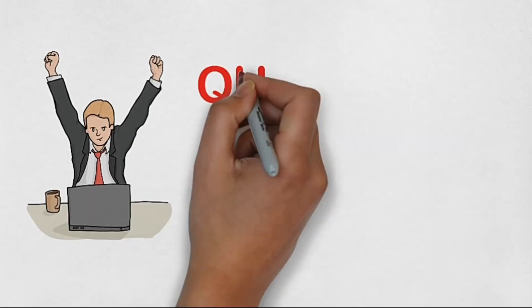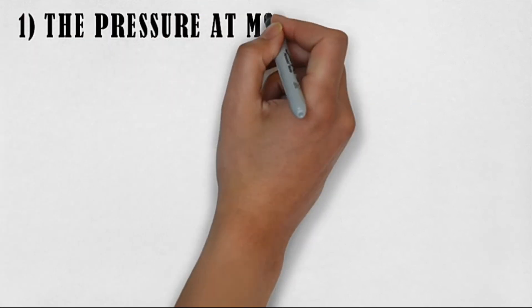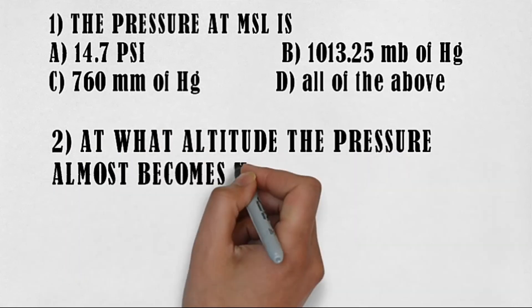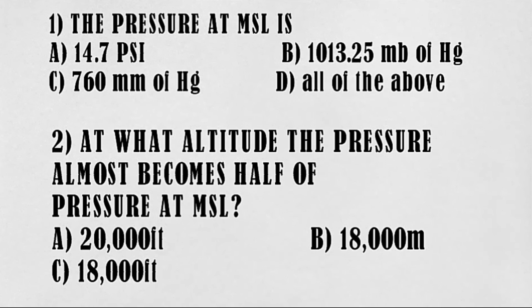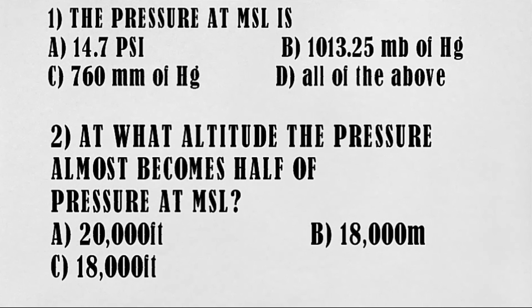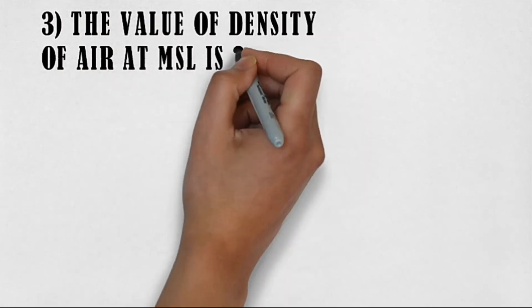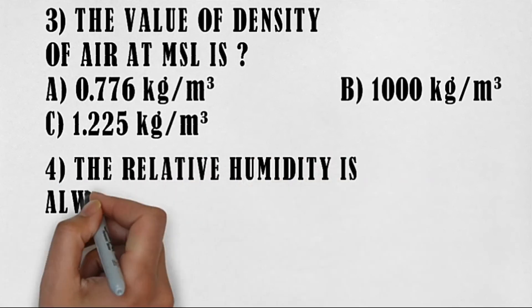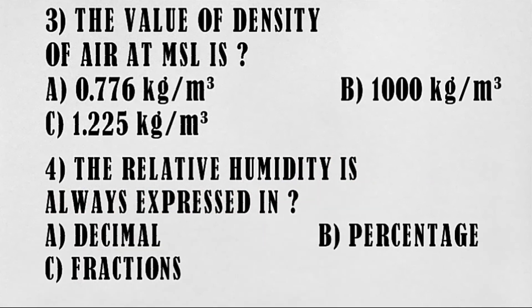It's time for review questions: What is the pressure at mean sea level? At what altitude does pressure become approximately half of that at mean sea level? What is the density of air at mean sea level? Relative humidity is always expressed in what unit? Try to solve as many questions as possible — search for Module 8 question PDFs online and practice.